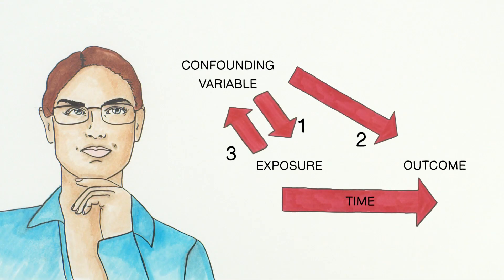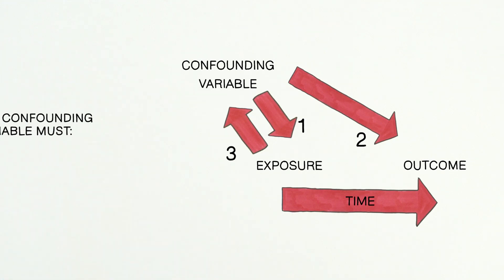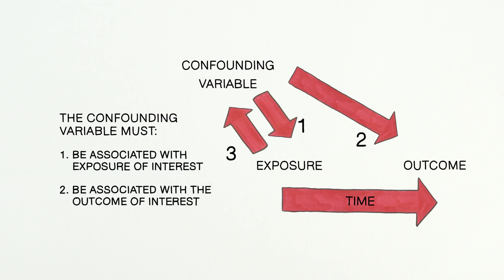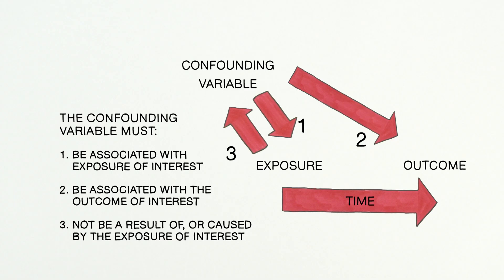Confounding can be a major source of bias in epidemiologic studies — bias that leads to spurious conclusions about a given relationship. Therefore, it's crucial that we critically evaluate the associations we observe, using the three criteria for a confounding variable and causal mapping to ensure that we are aware of potential confounders and address them within our studies.